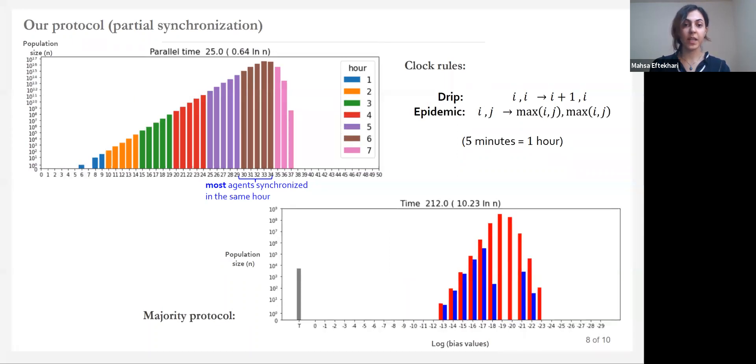As we observed, the benefit of the partial synchrony is its time optimality, but we lose perfect cancelling, since now we have more than one bias value among the population at any time. As a result, the ending configuration looks like this. Most of the agents have three biases, but there are still some minority left. In this example, red is the majority.